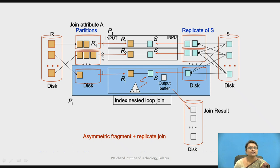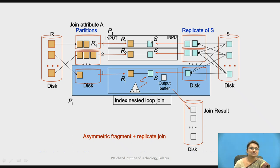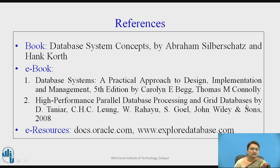The scenario can be seen in the diagram: relation r is partitioned into r1, r2, and so on, stored across disks. Relation s is replicated on every disk. The partitioning process and the replication process are both visible here. Using indexing, partition ri takes the join operation with replicated s, and the results are stored on the corresponding disk. This is how the parallel nested loop join works. Thank you.